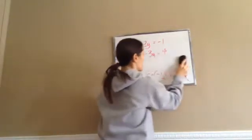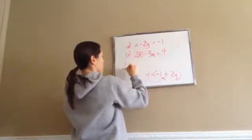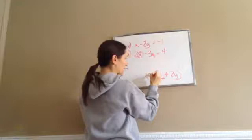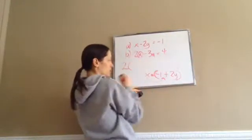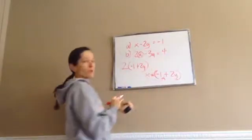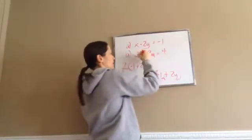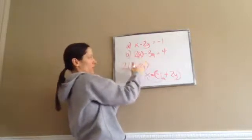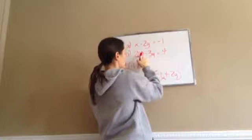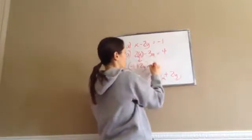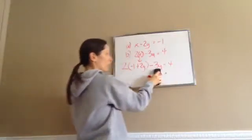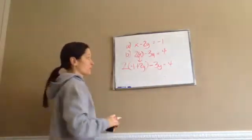So I write 2, and where I see x, I write what x equals in parentheses: negative 1 plus 2y. Then bring everything else down: minus 3y equals 4. That becomes our new equation, and we're going to find the answer for y.